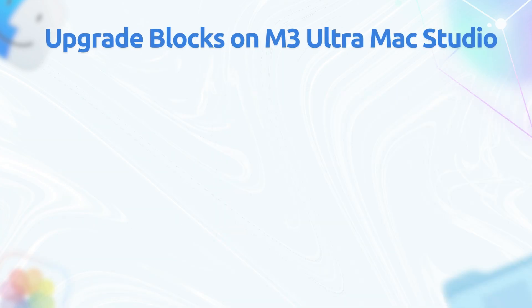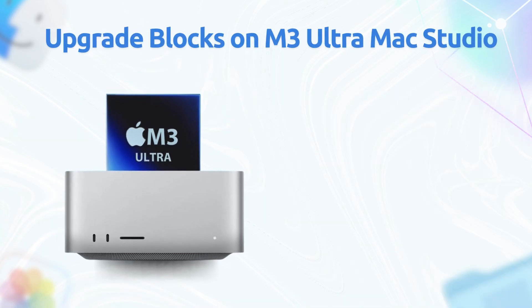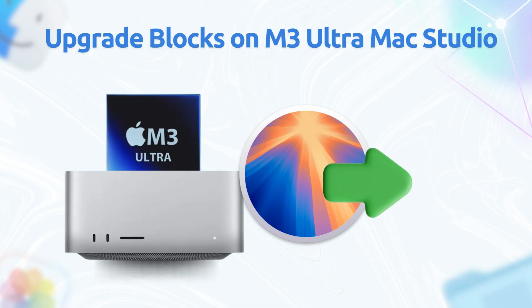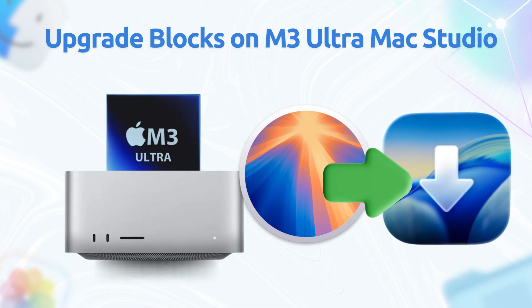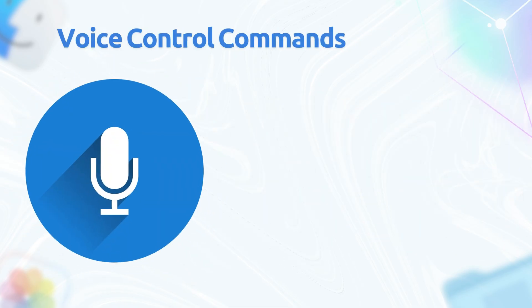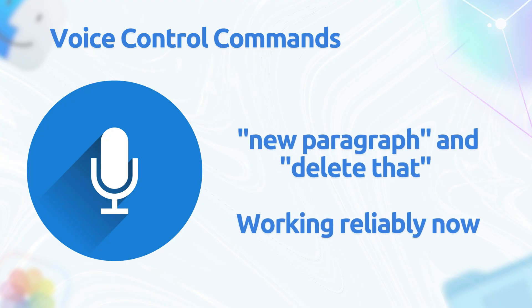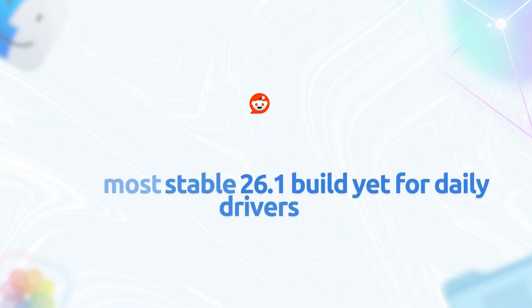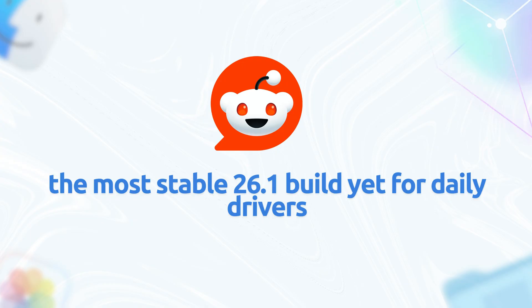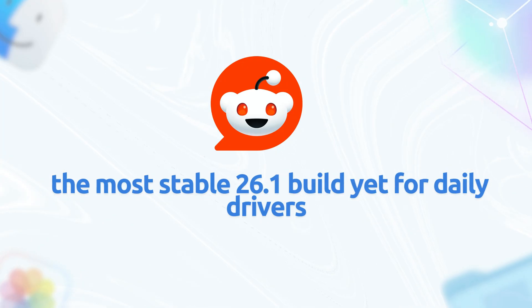M3 Ultra Mac Studio users faced blocks when upgrading from Sequoia, but Beta 4 ensures smooth updates through system settings. Voice control accessibility commands like 'New Paragraph' or 'Delete' now work reliably in text apps — a big win for users who rely on voice navigation. These fixes make Beta 4 the most stable 26.1 build yet, according to Reddit's macOS Beta community.